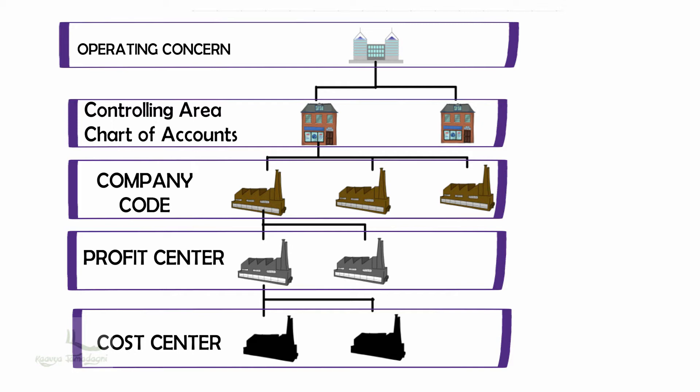Usually, we will have one operating concern in an organization, and under it we will have the controlling area. A single operating concern can have multiple controlling areas under it. The controlling area is the central organizational unit within the CO module, assigned to the operating concern. It is where internal reporting to top management is done by managing cost and revenue.